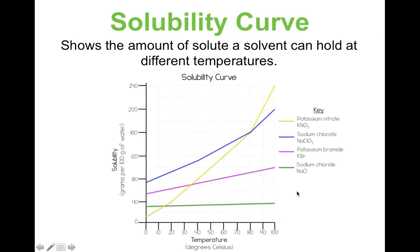Another question, thinking in the other direction: how much solute could potassium bromide hold at 10 degrees Celsius? Potassium bromide is the pink line. Go to 10 degrees Celsius, go up until you hit the pink line, then go over — it's right between 40 and 80, so it would be 60 grams. It can hold 60 grams of potassium bromide in 100 grams of water at 10 degrees Celsius.